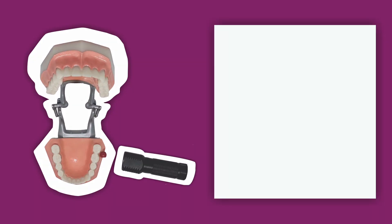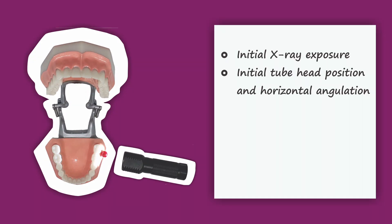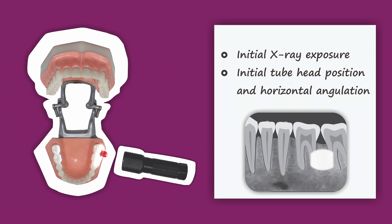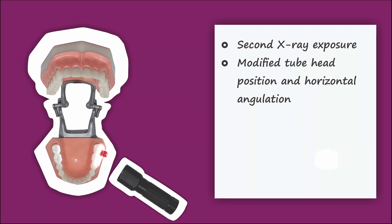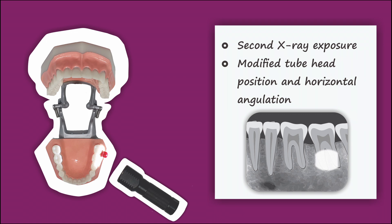Next, the red object is placed on the buccal of the teeth. We expose the object with the standard tube head position and horizontal angulation, and on the radiograph there is a radiopaque object between the root of 36 and 37. Then for the second exposure, we modify the tube head position and horizontal angulation. On the radiograph, the radiopaque object is now superimposed on the root of 37.